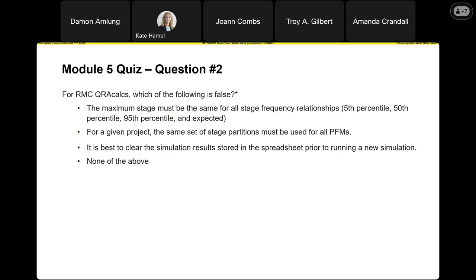Question number two, also with RMC QRA calcs, which of the following is false? First: maximum stage must be the same for all stage frequency relationships — that is true. Second: for a project, the same set of stage partitions must be used for all potential failure modes — that is also true, because of how the spreadsheet pulls things together to make the big FN. Third: it is best to clear the simulation results prior to running a new simulation — that is true. So the correct answer is none of the above.